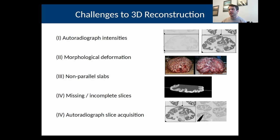There's a lot of missing or incomplete sections, which creates challenges. There's also a fair amount of variability in how the autoradiographs were acquired. So there's a lot of stuff that has to be done to get these 2D images into 3D.